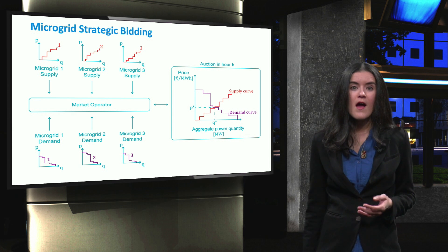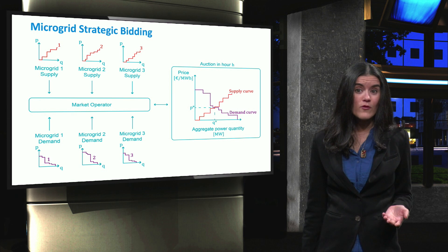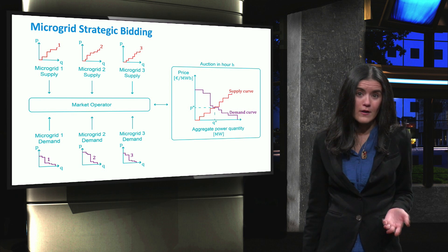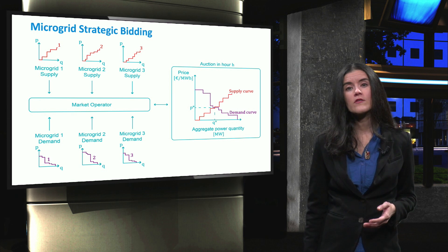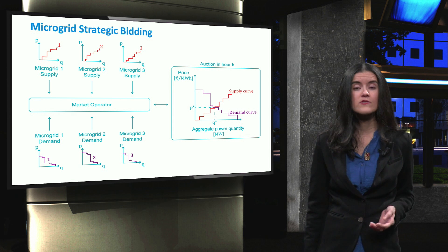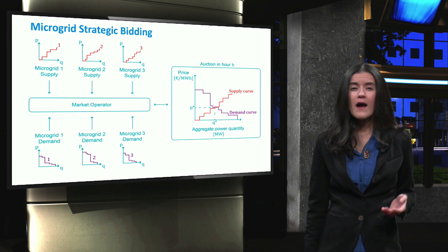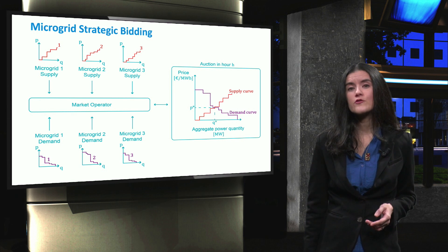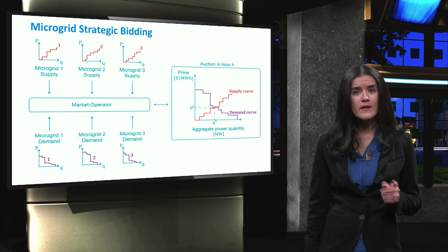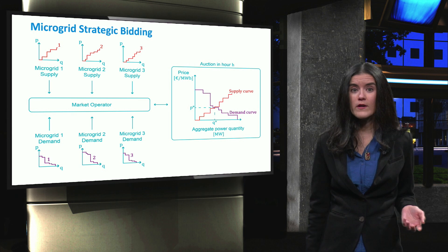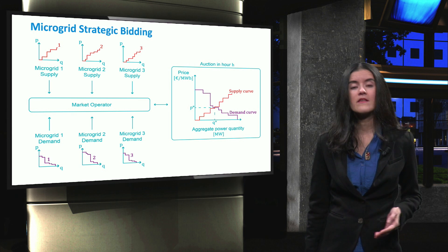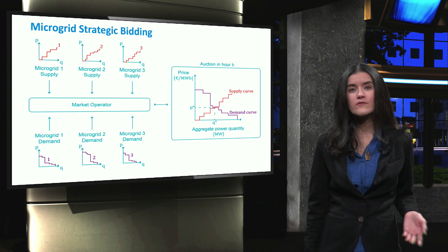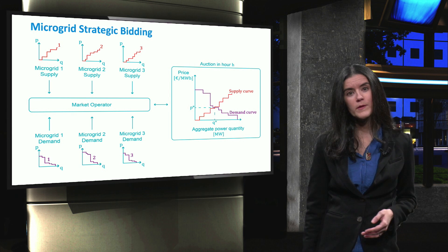Another constraint is to ensure that the current flow through the lines is always within the maximum thermal limits. Moreover, as low voltage microgrids are connected to the medium voltage upstream network through a medium voltage to low voltage transformer, another security constraint is to ensure that this interconnection is not overloaded, as it could activate the overcurrent relay of the transformer.